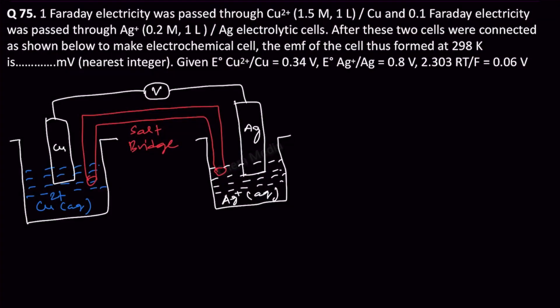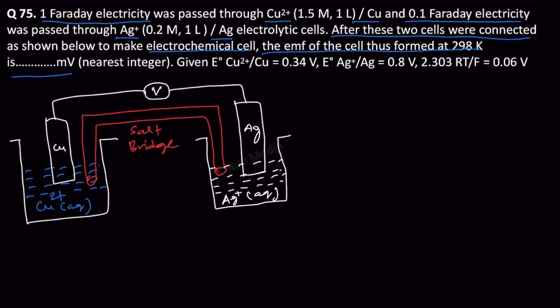Hello everyone, here's a question based on electroplating. 1 Faraday of electricity was passed through Cu²⁺|Cu where the concentration of Cu²⁺ is 1.5 molar, and 0.1 Faraday of electricity was passed through Ag⁺|Ag where the concentration of Ag⁺ is 0.2 molar electrolytic cells. After these two cells were connected as shown below to make an electrochemical cell, what is the EMF of the cell thus formed at 298 K? We have to find the answer in terms of millivolts.